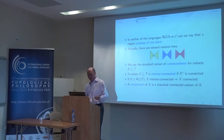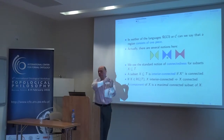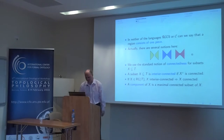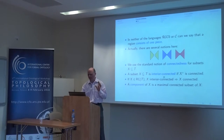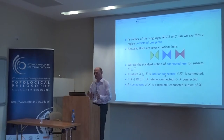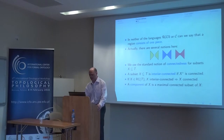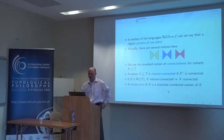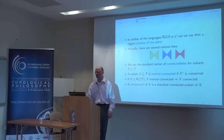The yellow set is not connected, and therefore certainly not interior connected. The blue set — which consists of two triangles touching at a point — is not interior connected; its topological interior consists of two separate pieces. The red set is interior connected. So when I say a set is interior connected, I mean nothing more than its topological interior is connected. For regular closed sets, interior connectedness implies connectedness, not vice versa. A component of a set is a maximal connected subset of that set.